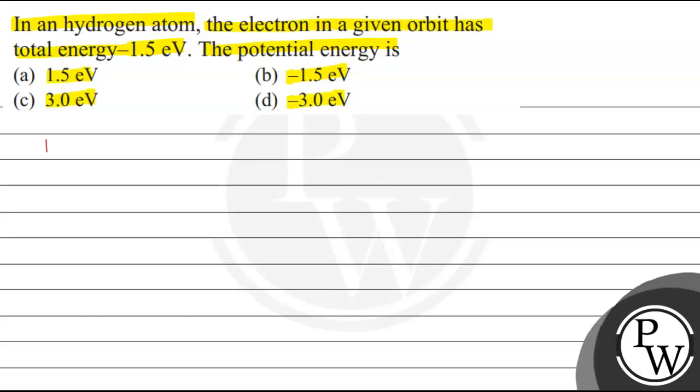Key concept which we use here, that will be: ratio of kinetic energy to total energy is minus 1. So that implies kinetic energy, K.E., upon total energy, T.E., is equal to minus 1.